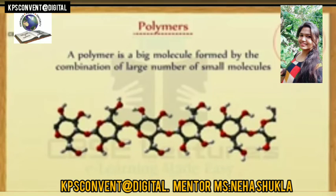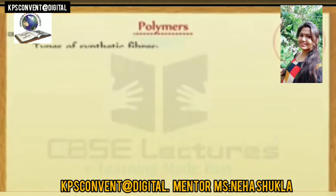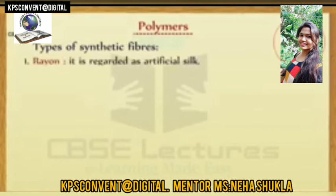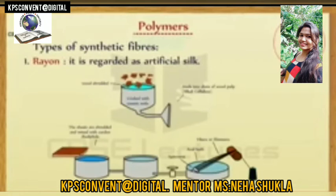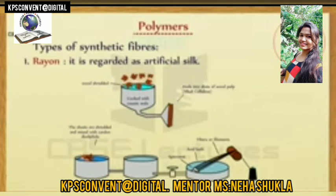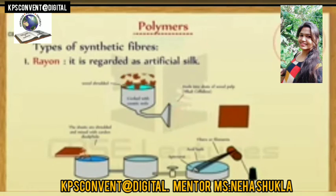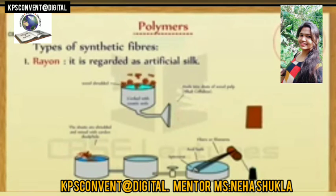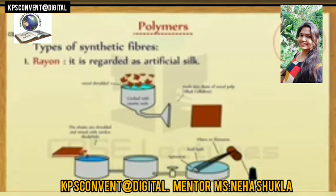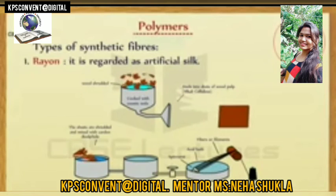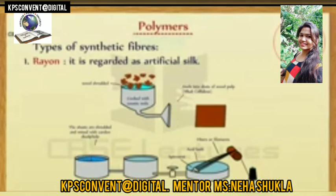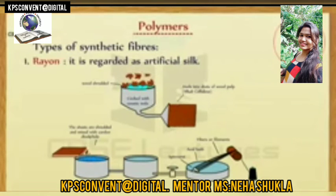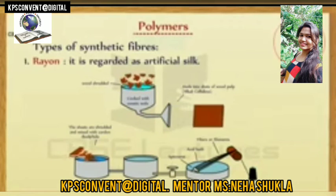Let us learn more about synthetic fiber. The first type of synthetic fiber is rayon. It is regarded as artificial silk. Process of making rayon: it is a man-made fiber obtained by chemical treatment of wood pulp. Wood pulp is dissolved in sodium hydroxide solution to form viscose. Viscose is forced to pass through the tiny holes of a metallic cylinder into a solution of sulfuric acid, when silk-like filaments of rayon are formed.